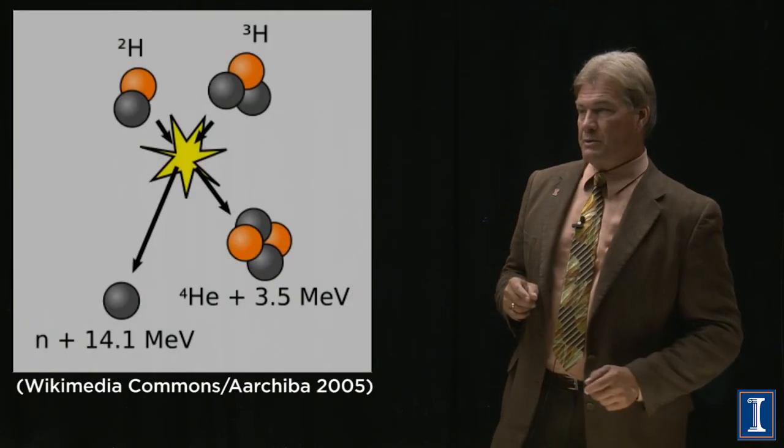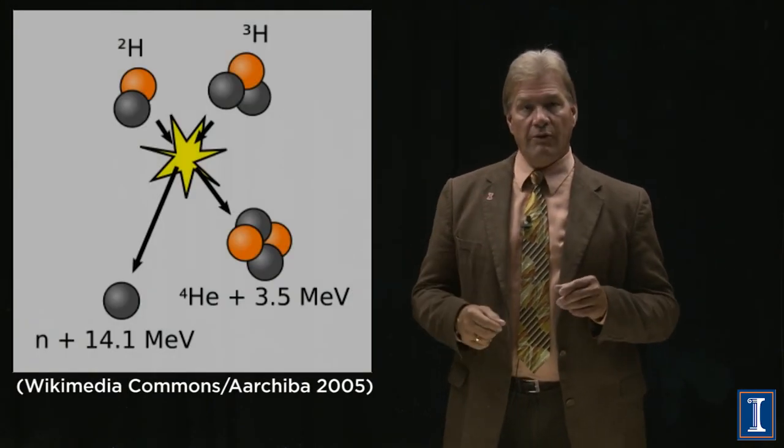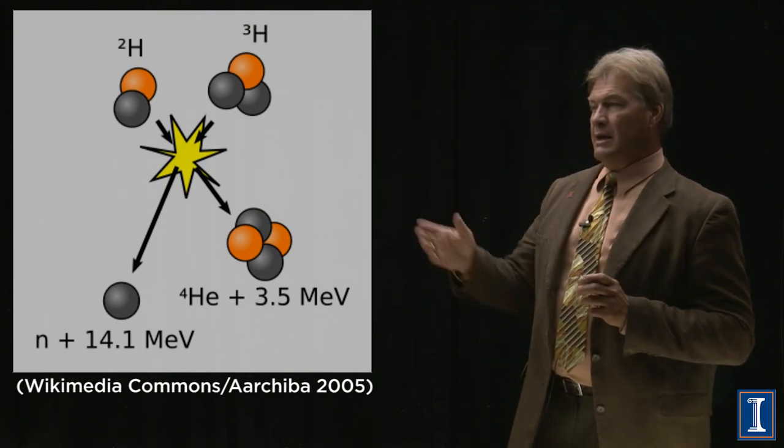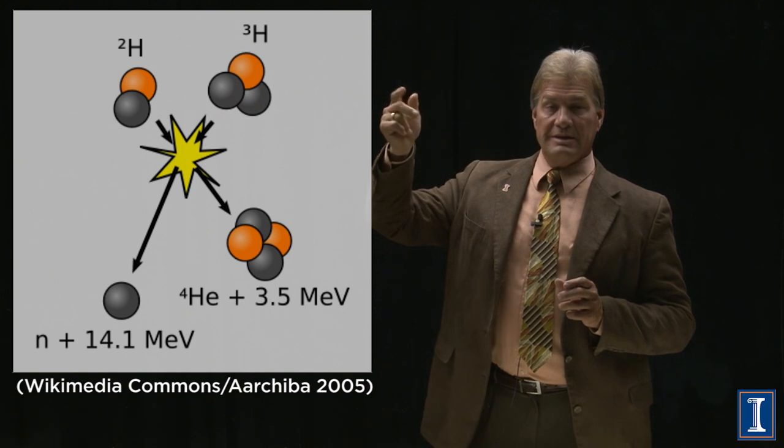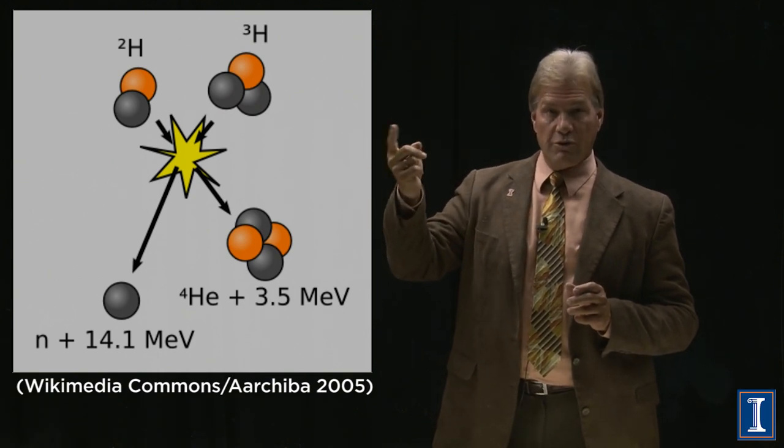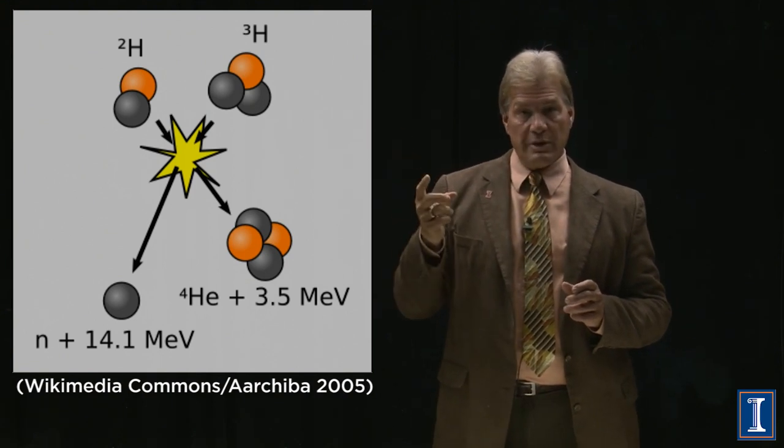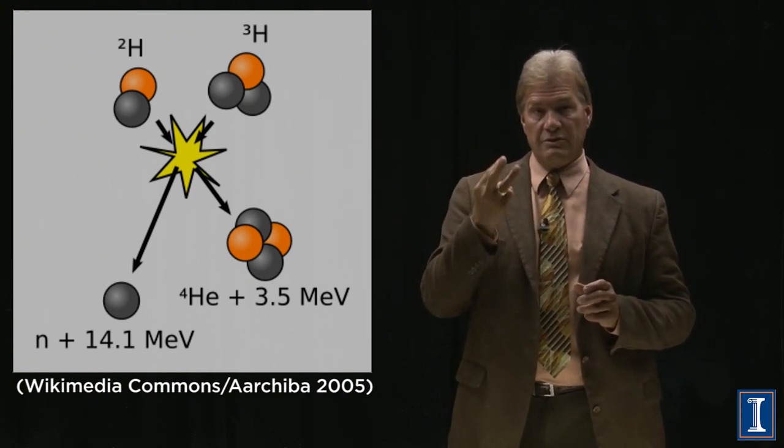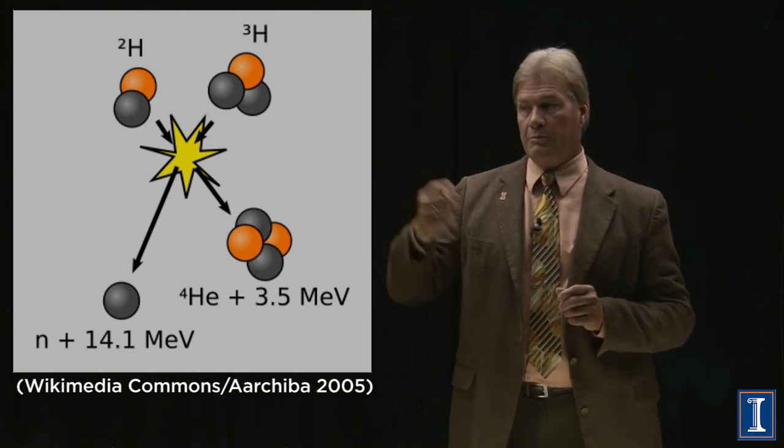But the one I'm going to give you the math for is this reaction. This is the simplest to do of all the fusion reactions. It takes deuterium, that's H2, because its atomic weight is two, one proton, one neutron. And tritium, H3, because its atomic weight is three, it has three nucleons, two neutrons, and one proton.